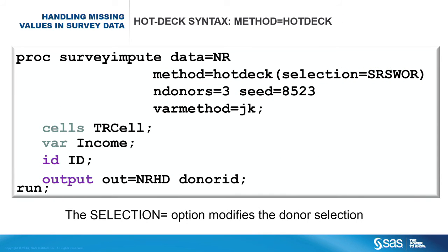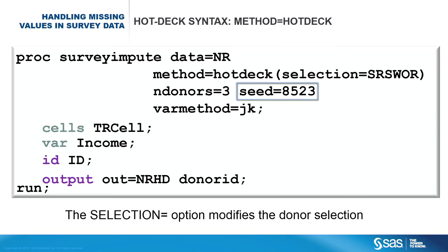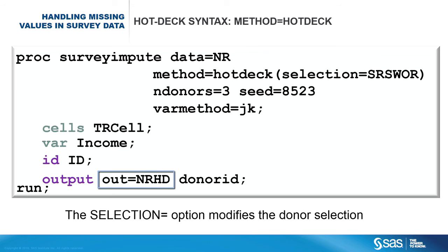To implement hot-deck imputation, use the method=hotdeck option in the Proc SurveyImpute statement. The selection=SRSWOR option requests donor selection by using simple random sampling without replacement. The seed= option specifies the random number generator seed. The ndonors=3 option requests three independent imputations. The cells statement defines the imputation cells and the var statement requests imputation for the variable income. The imputed dataset will be stored in the NRHD dataset.